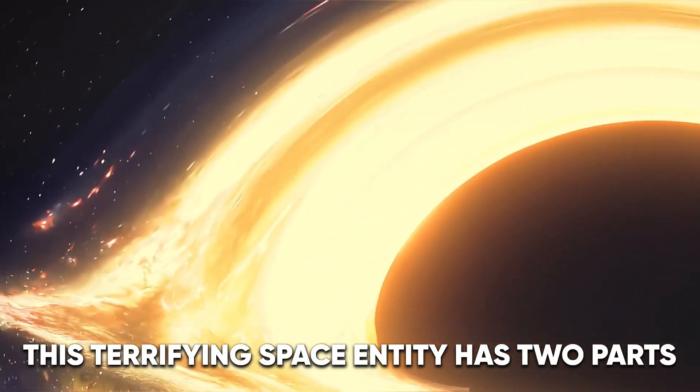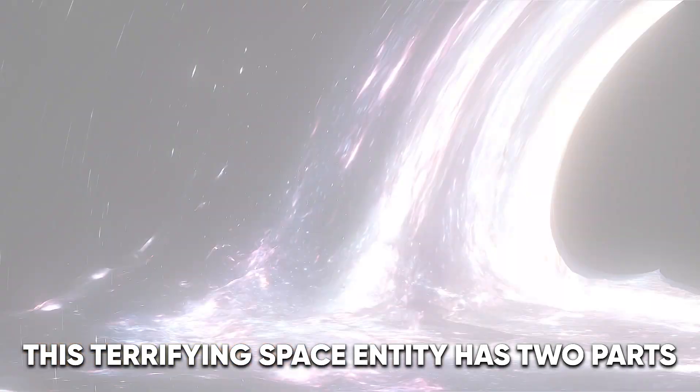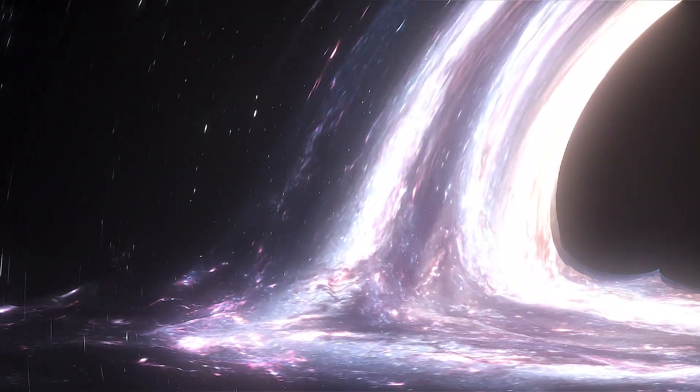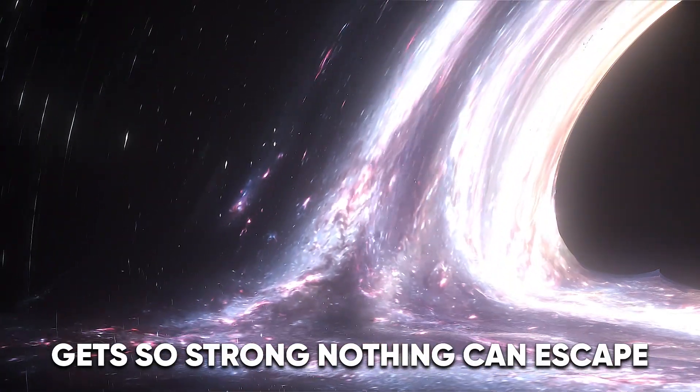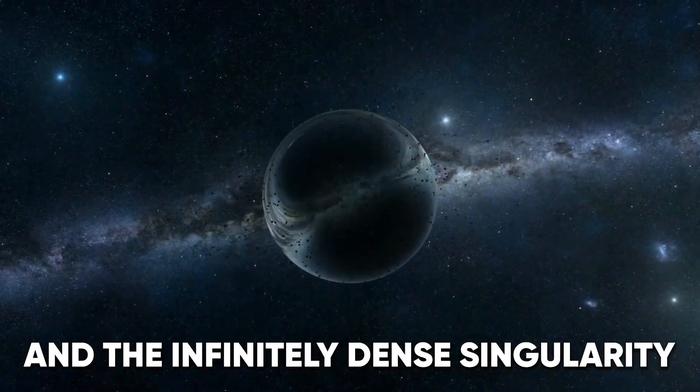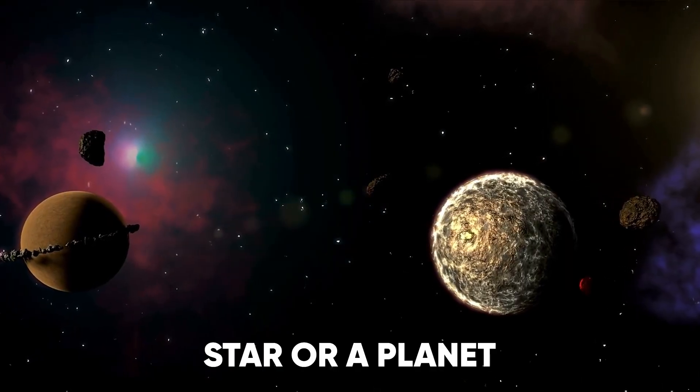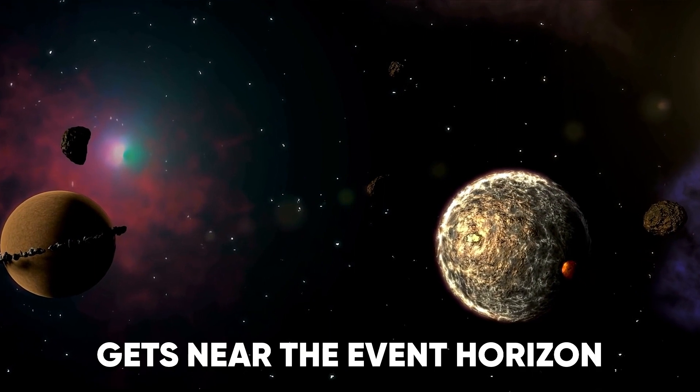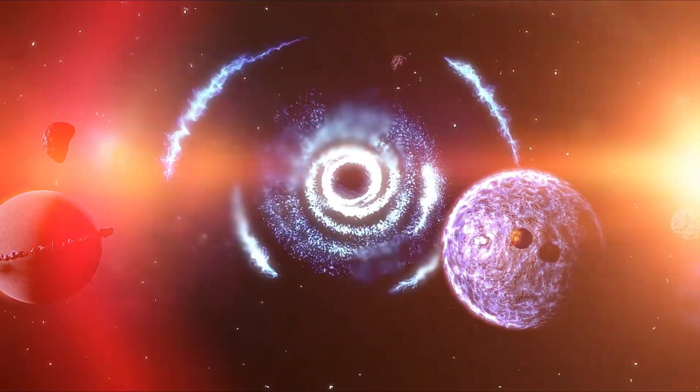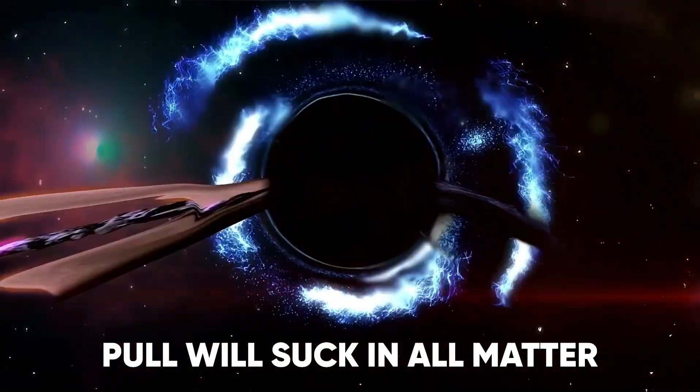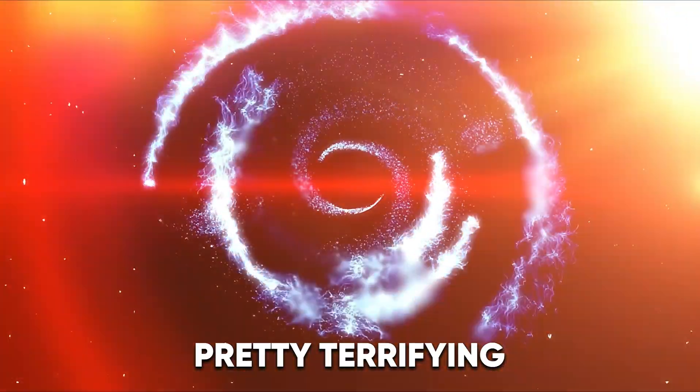This terrifying space entity has two parts: the event horizon, which is the point where the gravity gets so strong nothing can escape, and the infinitely dense singularity. Once a space object like a star or a planet gets near the event horizon, the black hole's immense gravitational pull will suck in all matter. Pretty terrifying, right?